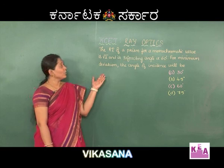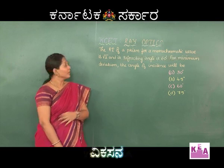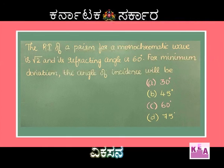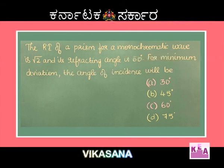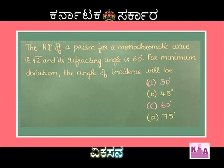Dear students, let's move on to another question related to prism. The refractive index of a prism for a monochromatic wave is √2 and its refracting angle is 60 degrees. For minimum deviation, the angle of incidence will be - options: A) 30 degrees, B) 45 degrees, C) 60 degrees, and D) 75 degrees.